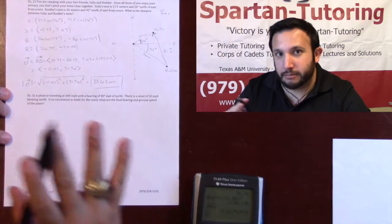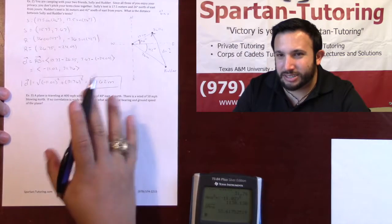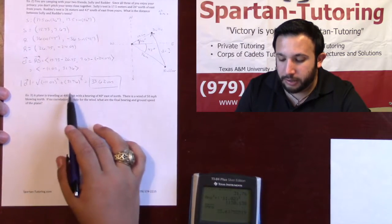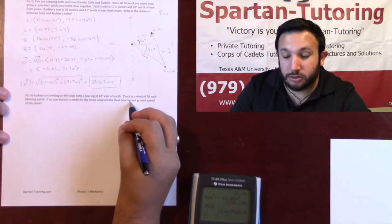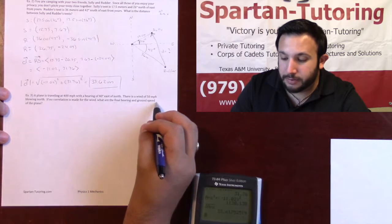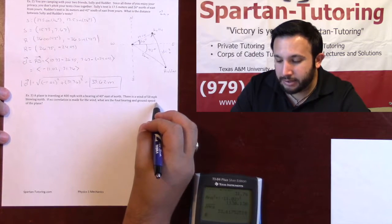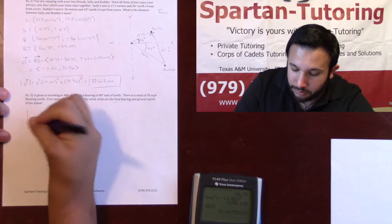Let's go ahead and figure out what the final bearing and ground speed is. Basically that's going to be the resultant vector of our plane and our wind. Final bearing means your direction. If it ever asks for your ground speed, that's going to be the magnitude.